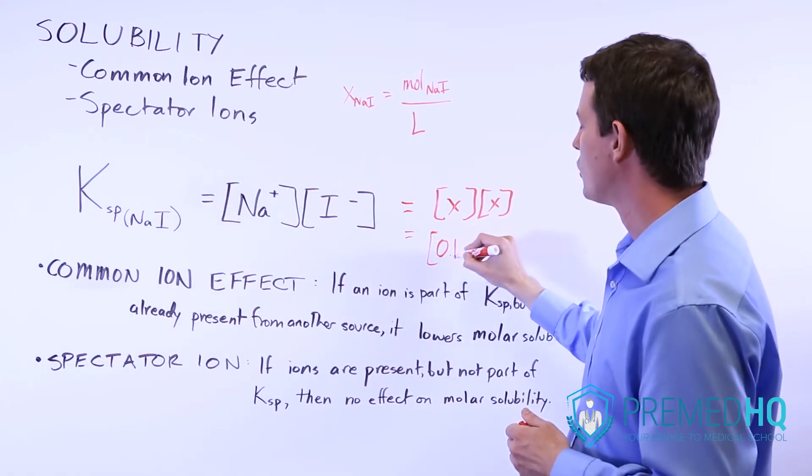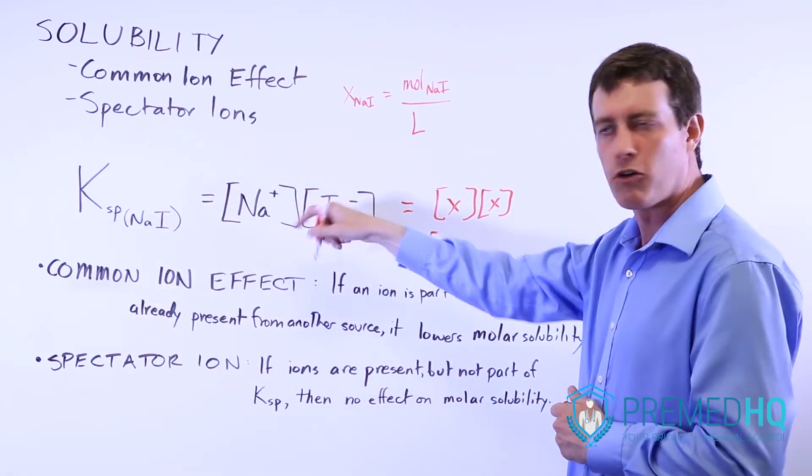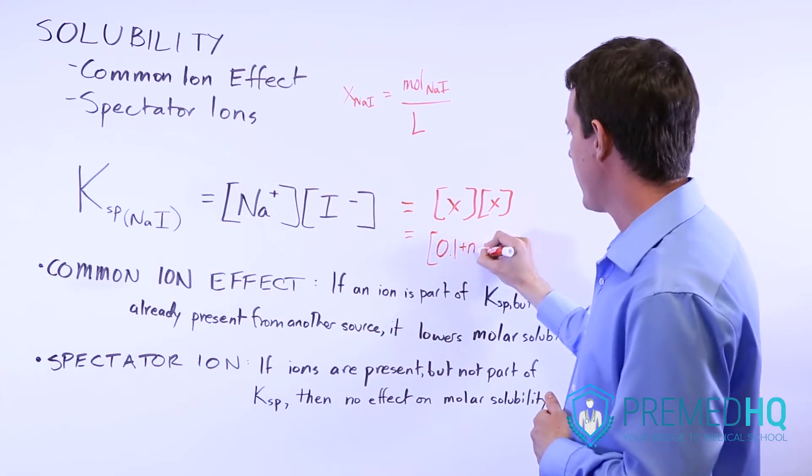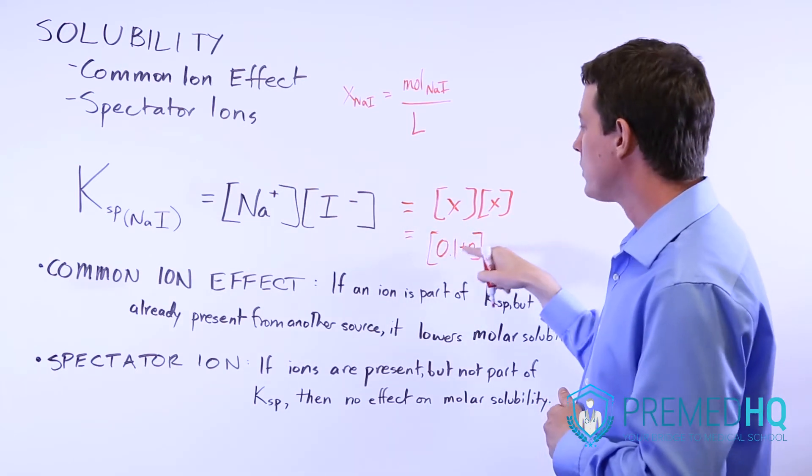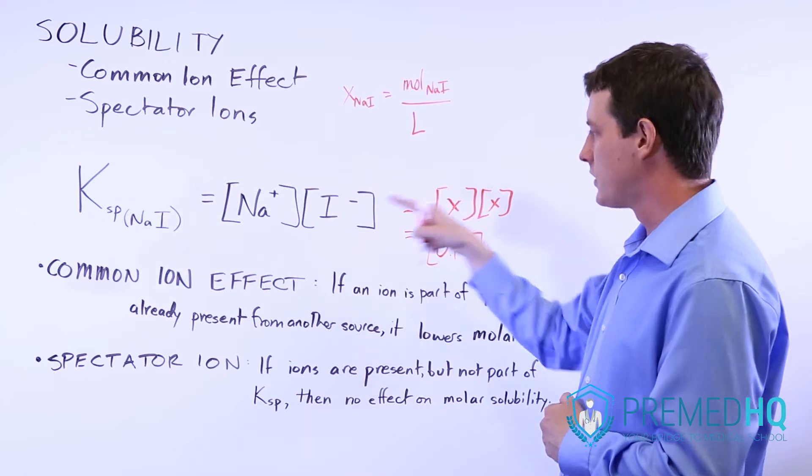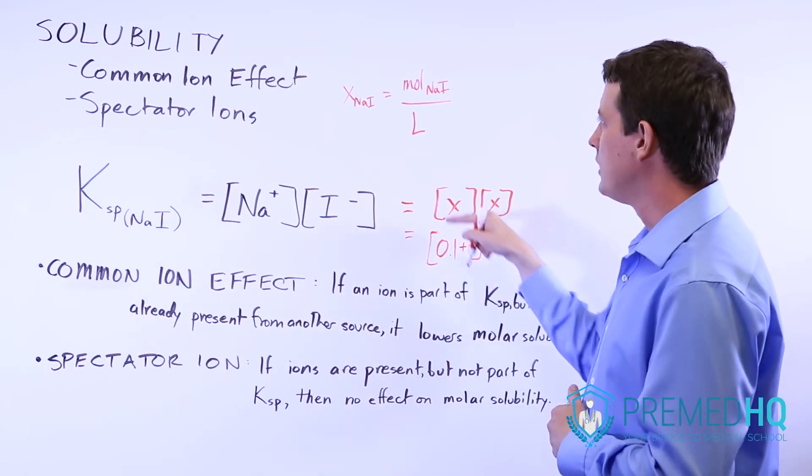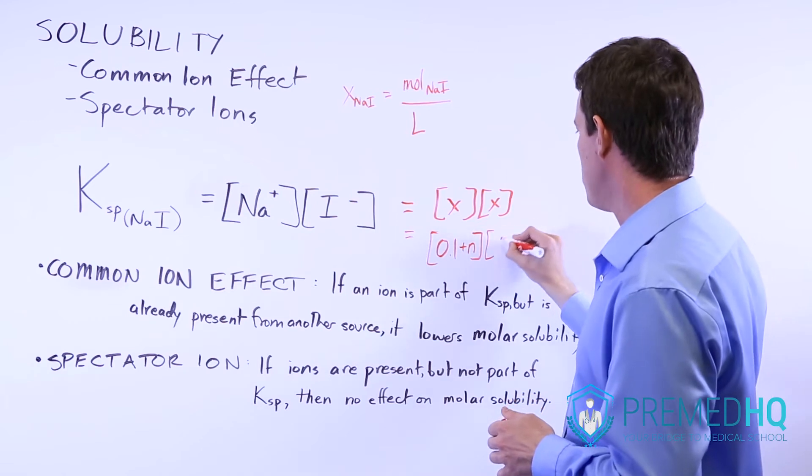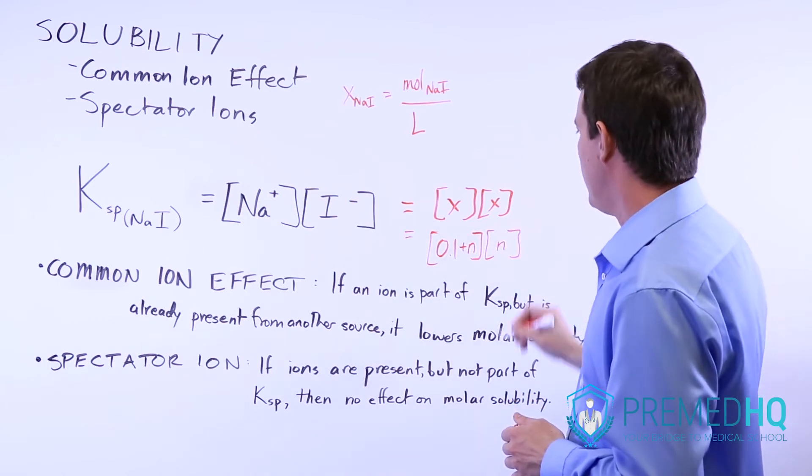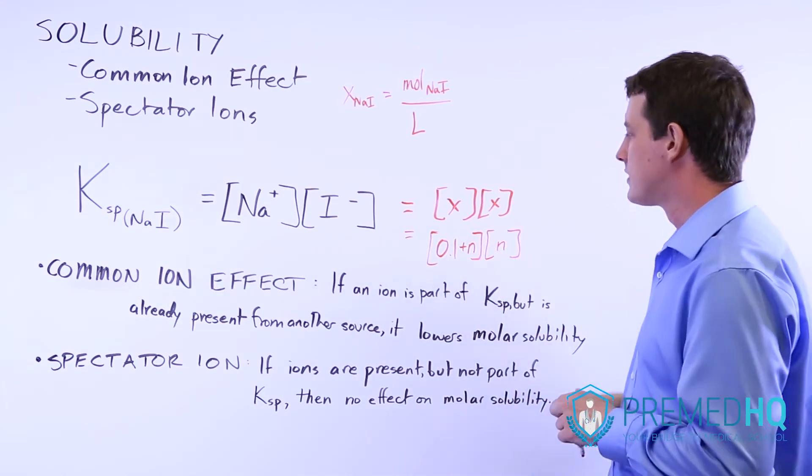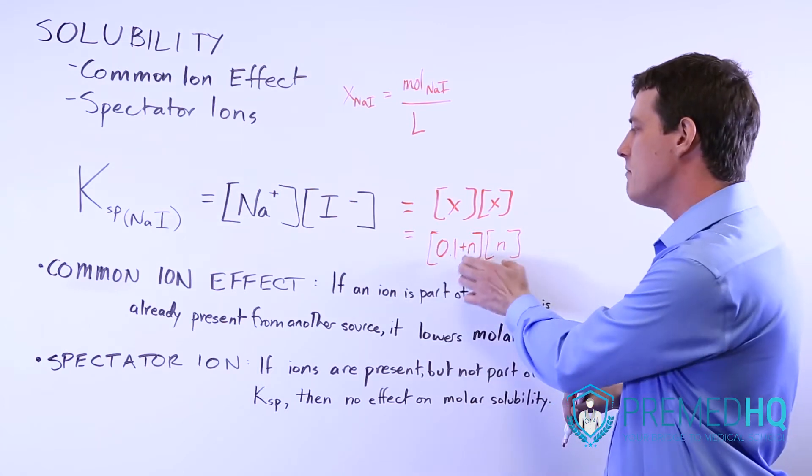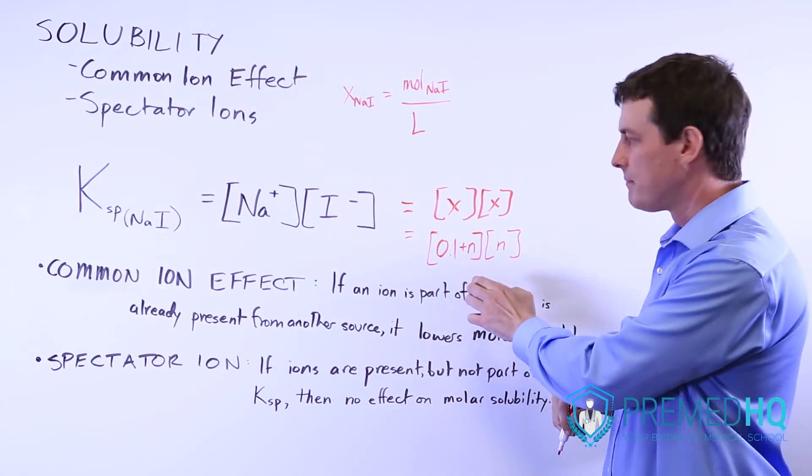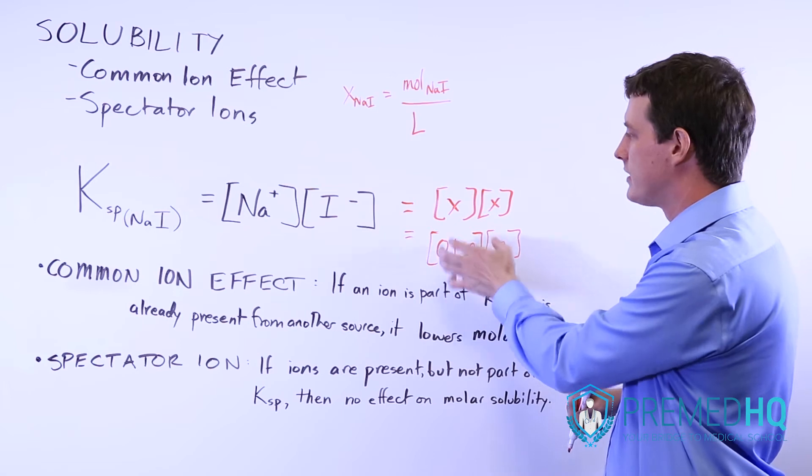What you'll end up with is 0.1 of the sodium that's already there plus N. That'll be the new equilibrium value of sodium with N units of sodium iodide already dissolved. And then we multiply that by N. And so then what you see is that you're going to have N be a slightly smaller number if this is going to equal that.